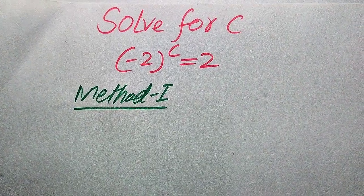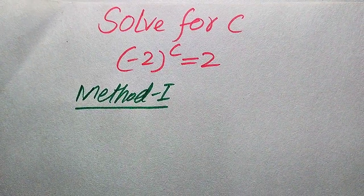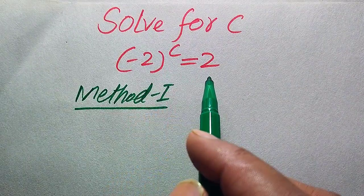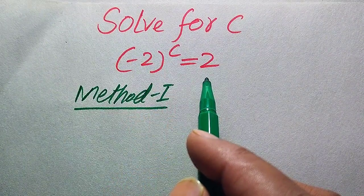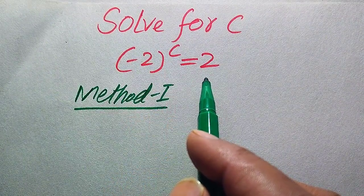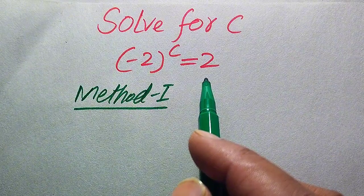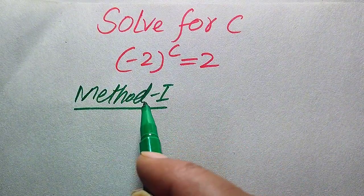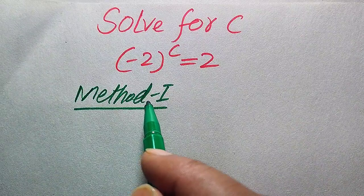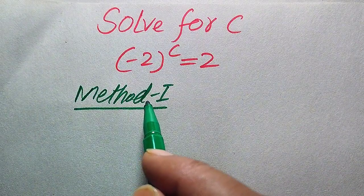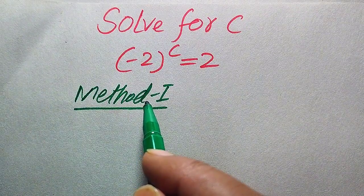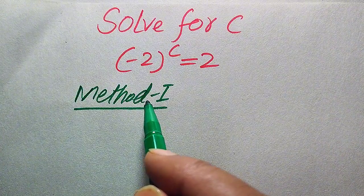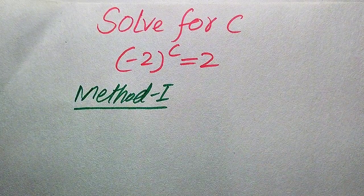Hello everyone, welcome to solve this nice Matholympet algebra problem. We have minus 2 to the power of c equals 2, and we solve this for all the values of c. We need to find all the roots of this equation, and we solve this problem using two methods. If you have any other method in mind, please don't hesitate to write it in the comment section.